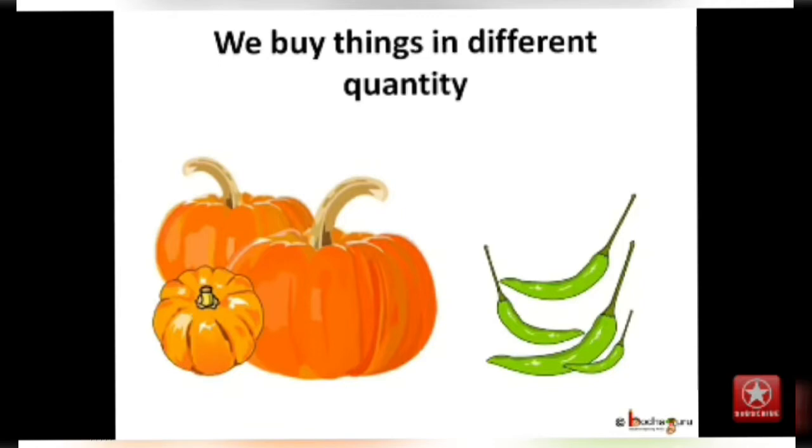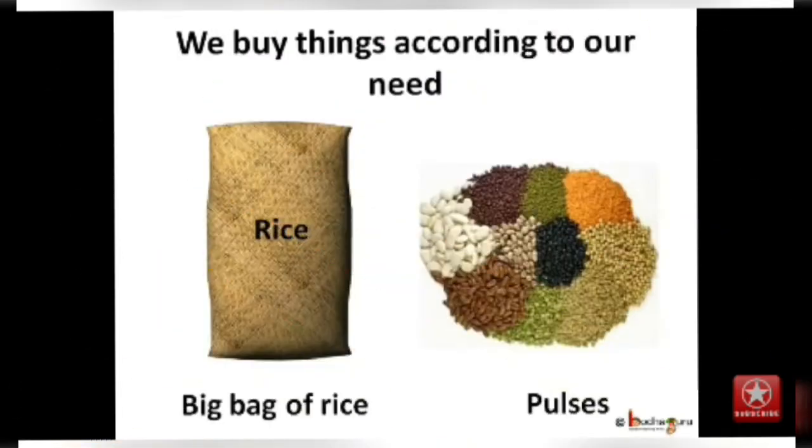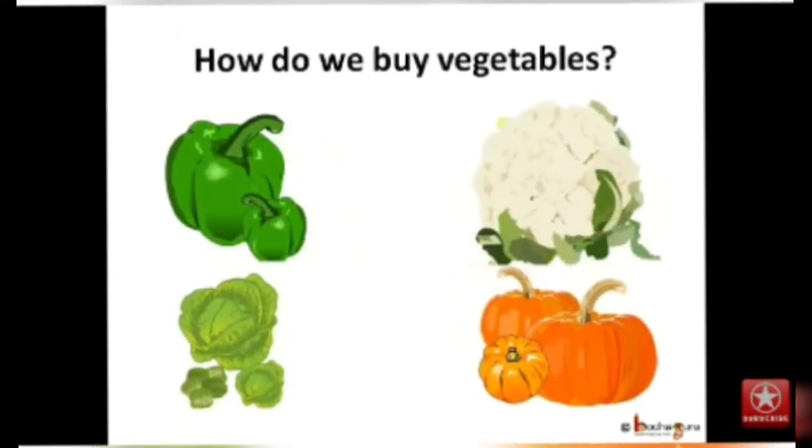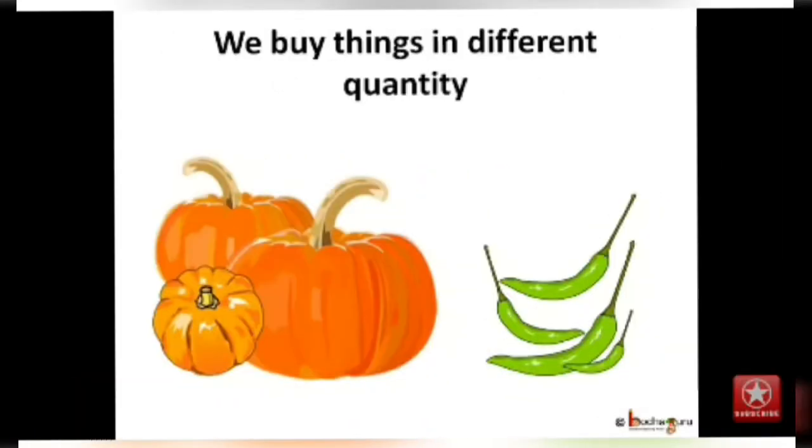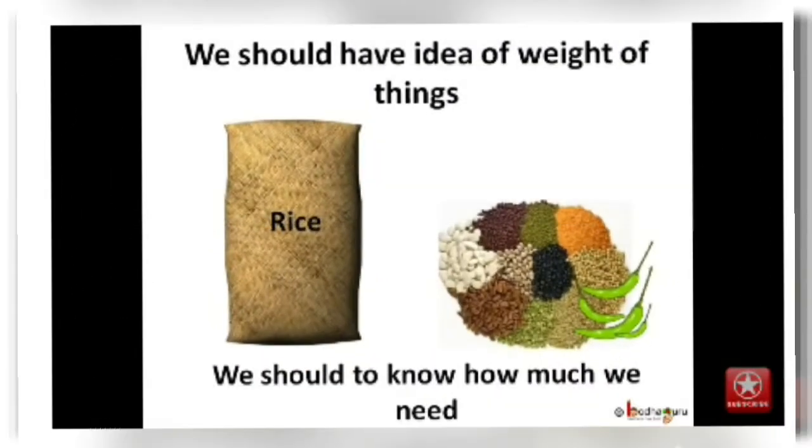Now when you are buying a pumpkin, you can buy a heavy one. But we don't need all the things in the same quantity. Like when we buy chili, we buy it in a small quantity. Similarly, we don't buy pulses as much as rice. We buy different things in different quantities. So, all these things we should keep in mind so that it should not get waste.